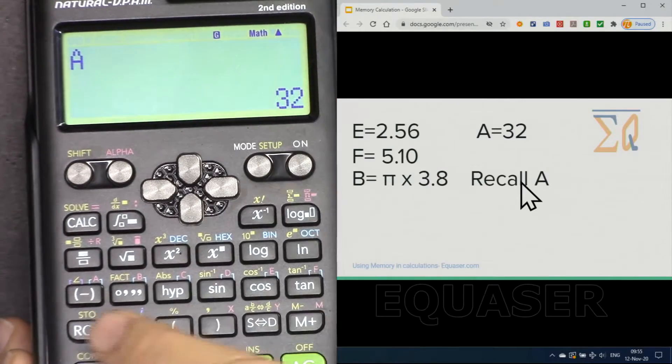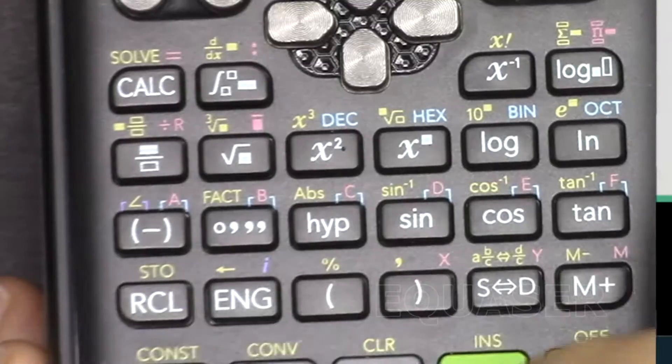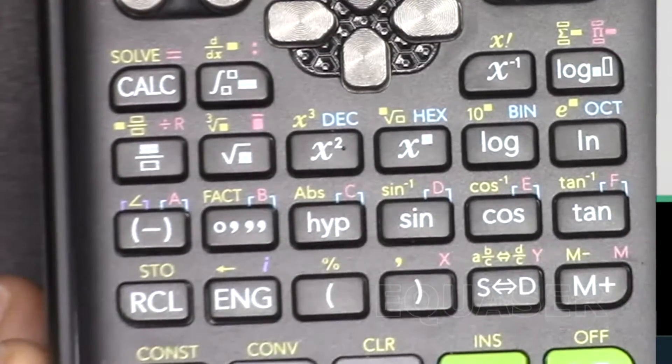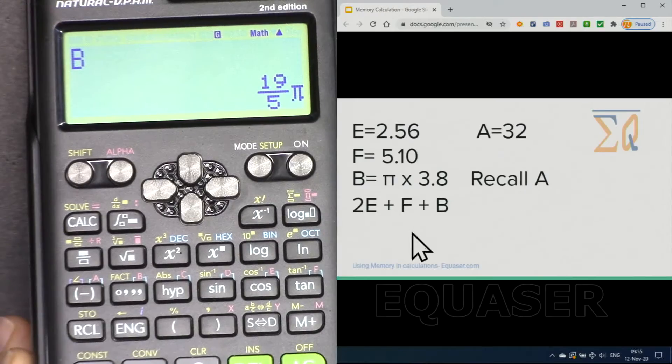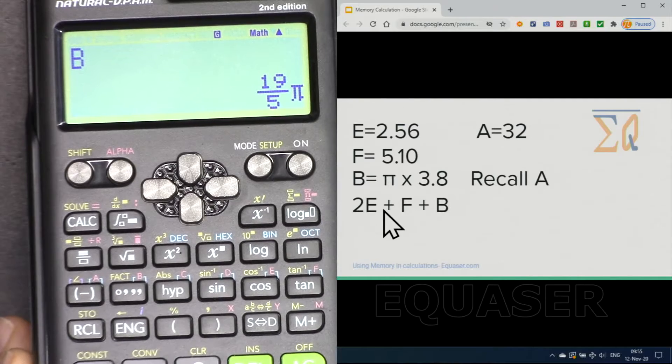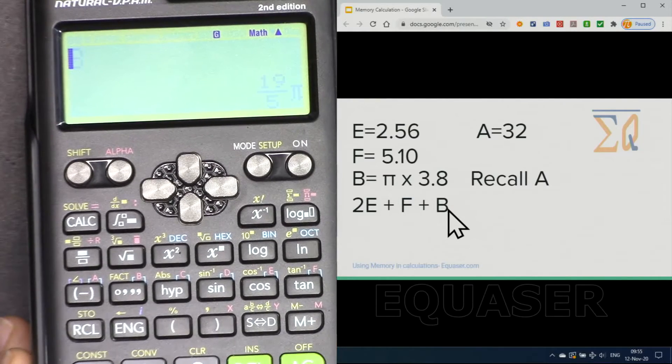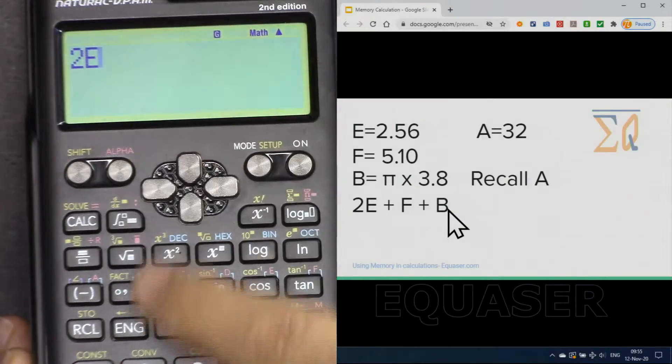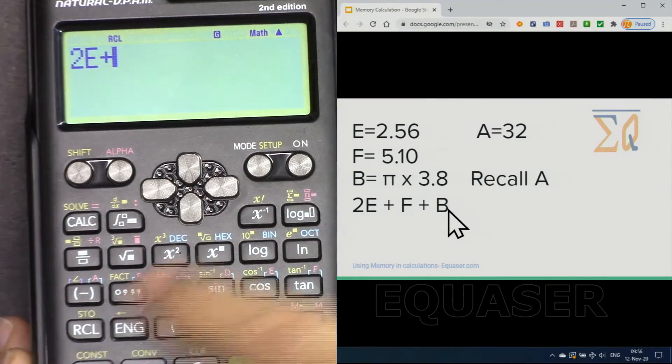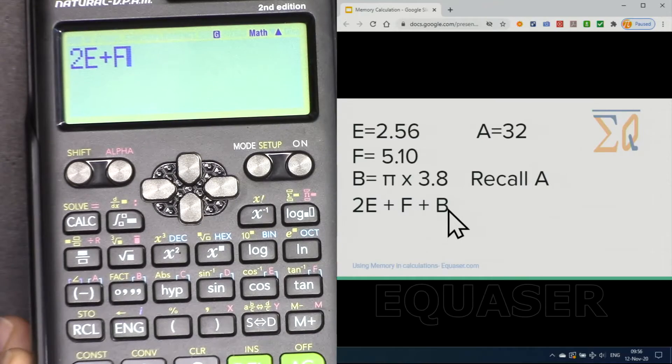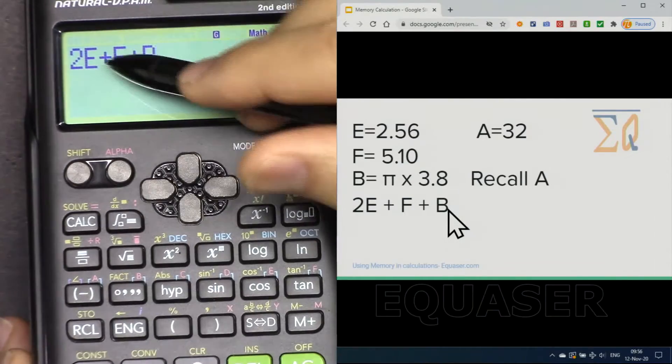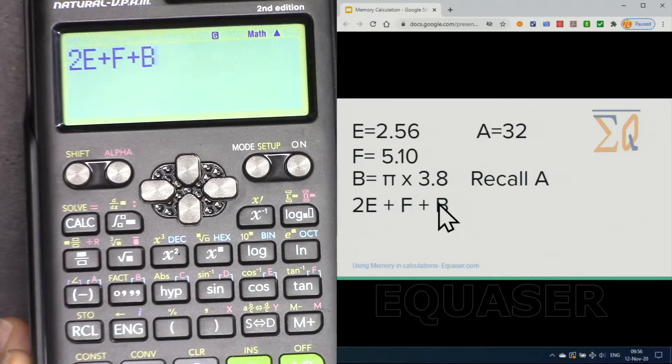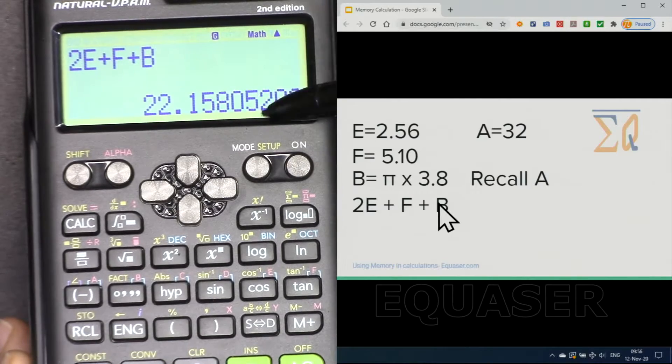And the same way recall B directly, this is recall RCL. And if you want to do 2E plus F plus B we can do so exactly the way that you write it and press equal and this is the result of the value from memory and calculate it here.